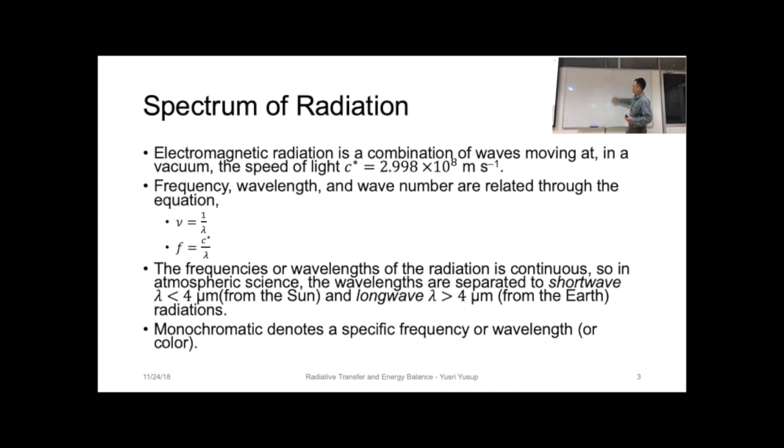Every point spans the entire spectrum in a continuous manner instead of a discrete manner. The frequencies or wavelengths of the radiation from the sun or light or electromagnetic radiation is continuous. In atmospheric science, the wavelengths are separated into two categories just to simplify.